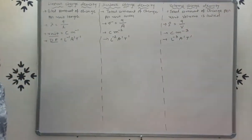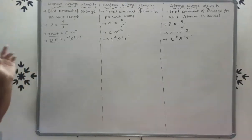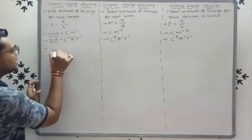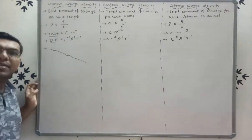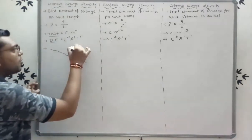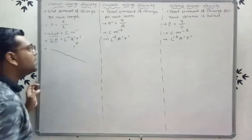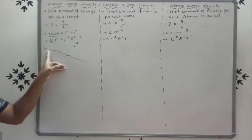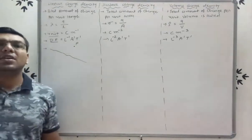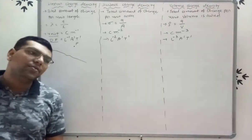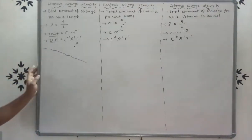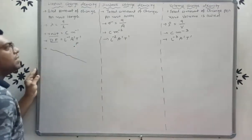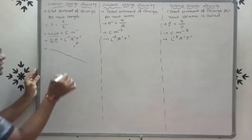Now suppose we have to find the electric field. Consider a wire of length L. At point P, we have to find the electric field. We distribute positive charge uniformly on this line, and we need to find the electric field at point P.